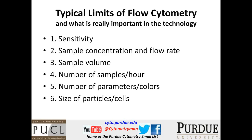Third is sample volume — what happens if you simply don't have very much volume? We always say flow cytometry is fantastic because you can look at such small volumes, except that if you only have a few microliters of sample, it's not so easy to actually run it on most flow cytometers. Fourth is the number of samples per hour. We've typically run tubes over the years, but today we move to plates, and we need to ask: what is the potential flow rate, how many samples can you run per hour, and how many samples can you run per hour and still get good data?